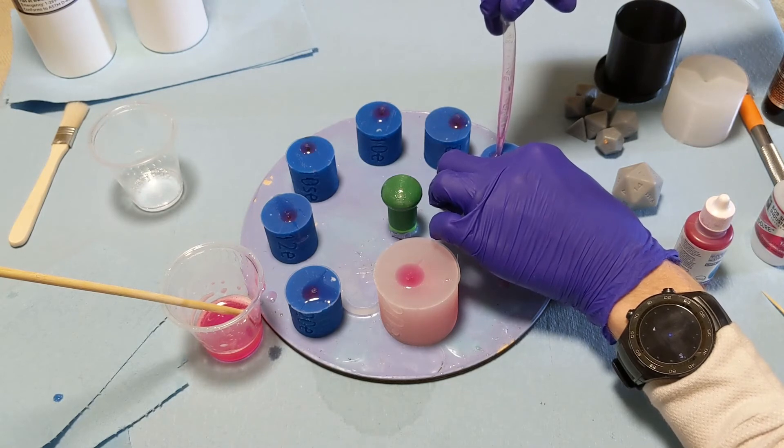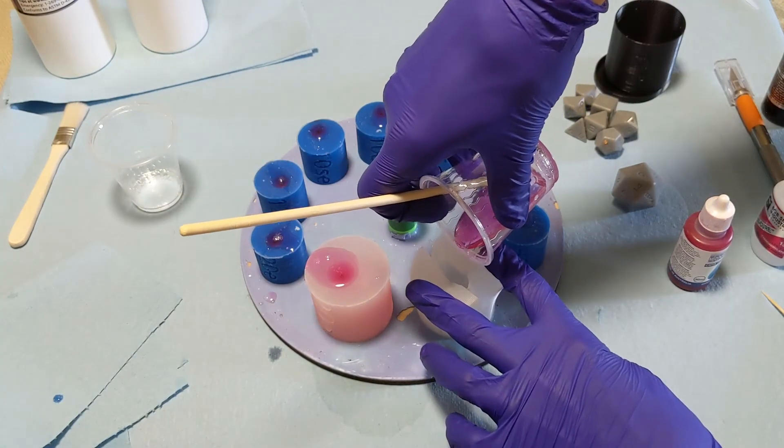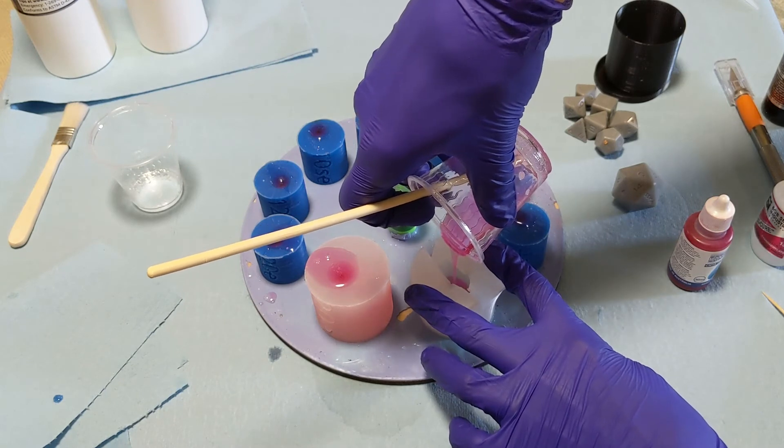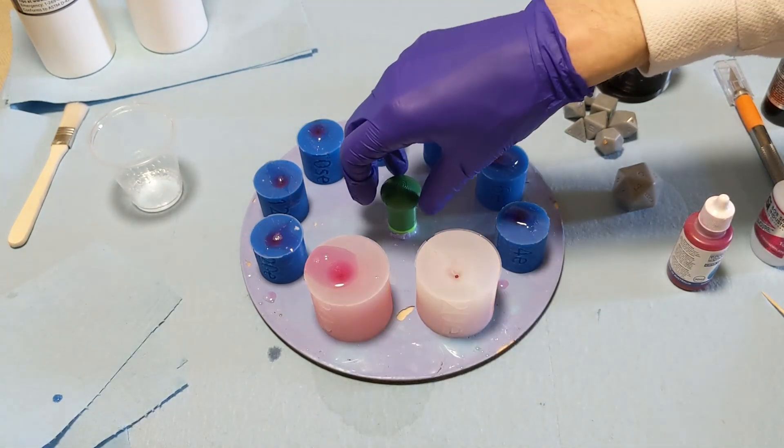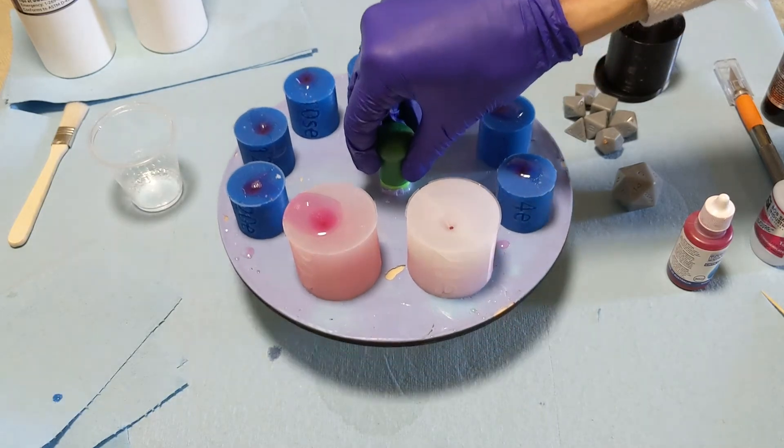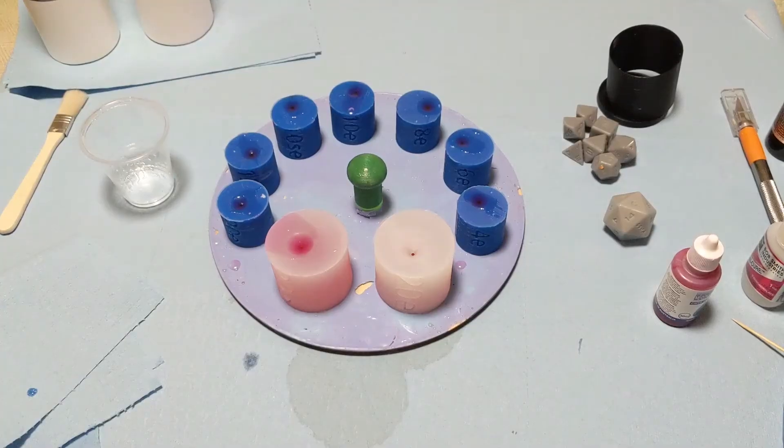And of course, if you do get holes in your dice, which will happen sometimes, I do have another video that shows you how to easily fix those. And I know that these are going to have to be sanded and have a lot of work done anyway, so I'm not too worried if I do get bubbles.